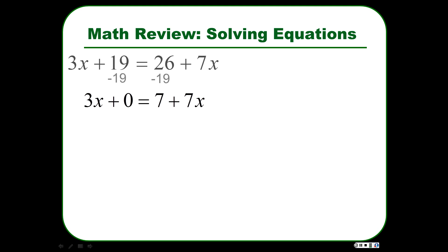So now we have this equation 3x plus 0 equals 7 plus 7x. We can get rid of the 0 because plus 0 doesn't mean anything. 3x is 7 plus 7x. We'd still like to have all of these numbers on one side and everything with an x on the other side consolidated like that. So we can subtract 7x from both sides.